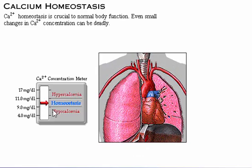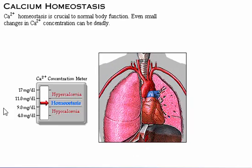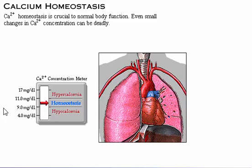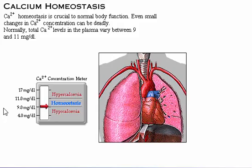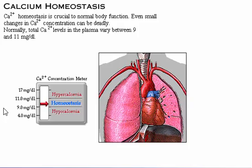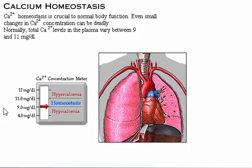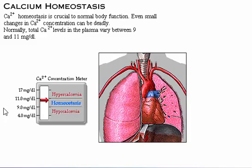Calcium homeostasis is crucial to normal body function. Even small changes in calcium concentration can be deadly. Normally, total calcium level in the plasma varies between 9 and 11 milligrams per 100 milliliters.